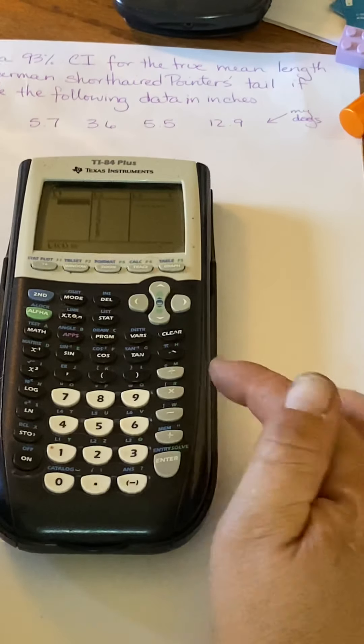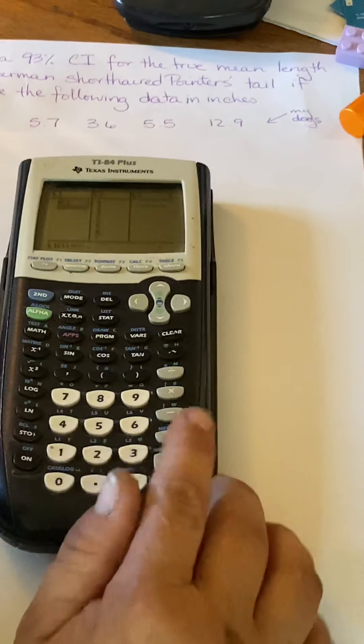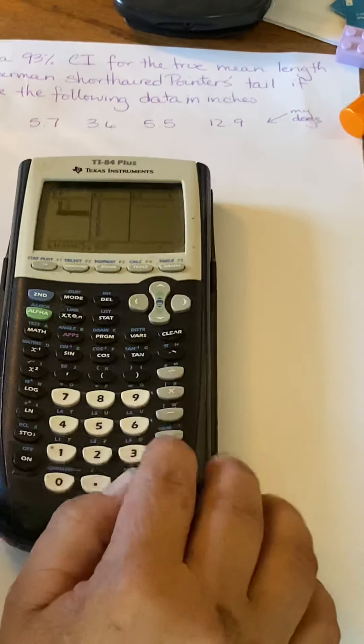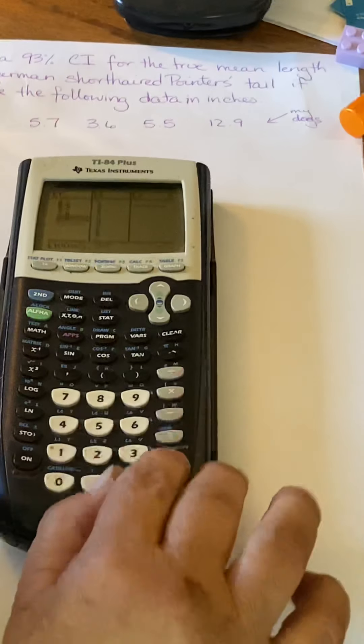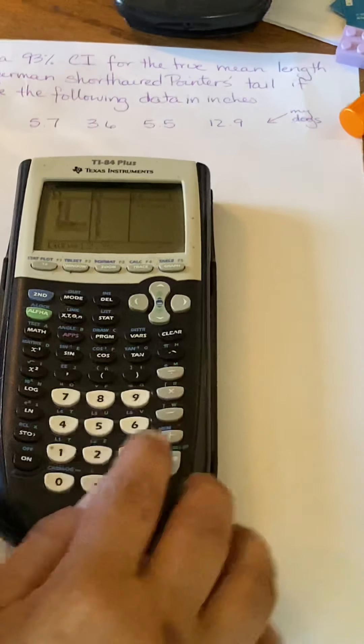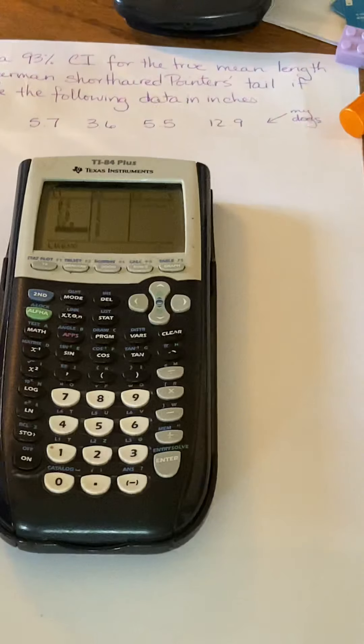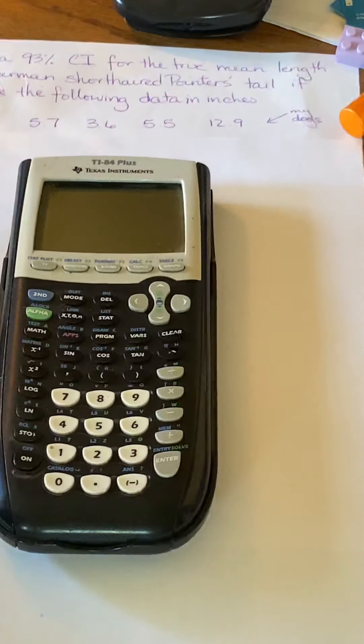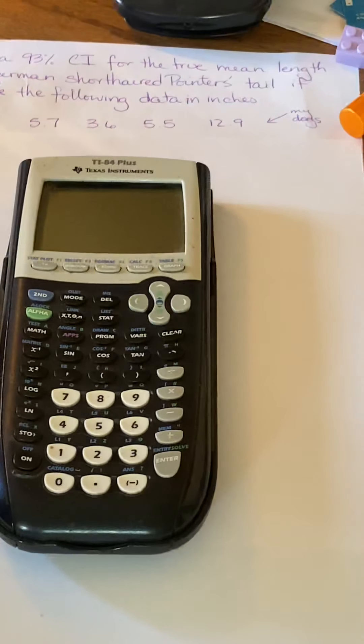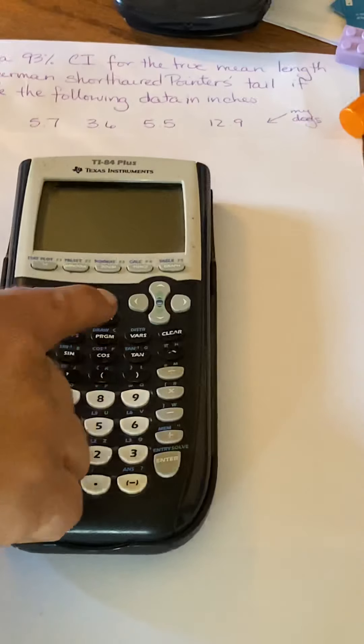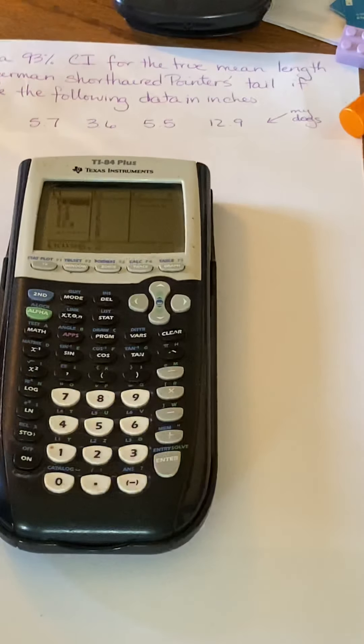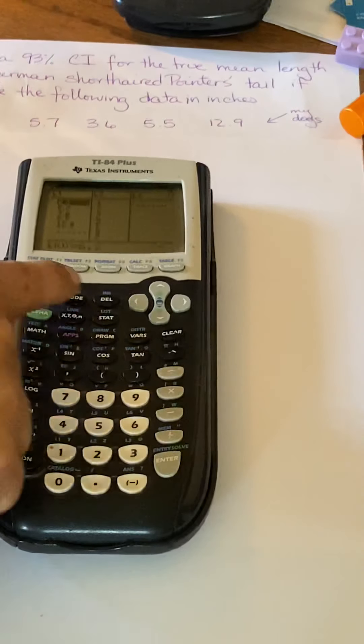So in L1 there, I'm going to put 6.2, enter 5.7, enter 3.6, 5.5, and 12.9. And after, remember, you hit that 12.9, you need to get out of here. And the way you're going to do that is by going second quit. So we get back to the main menu. Okay, so hopefully that is clear with everybody. So again, STAT, edit, put in your data values, and then second quit.